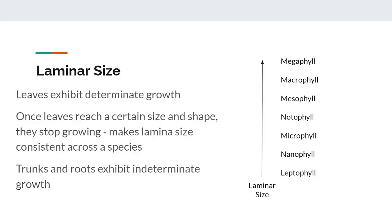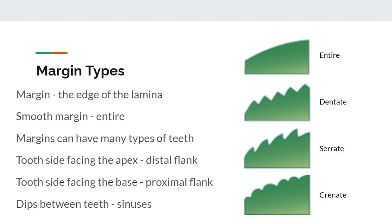The margin, or edge, of a leaf is an important identifying tool. There are many different margins in leaves, but a few common ones are: a plain smooth margin, simply called entire; and margins that have teeth, such as dentate, serrate, and crenate. The side of the tooth that faces the apex of the blade is called the distal flank, and the side that faces the base is called the proximal flank. The dips between each tooth are also called sinuses.